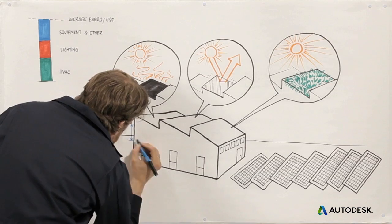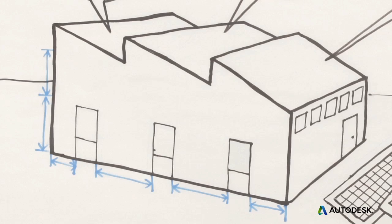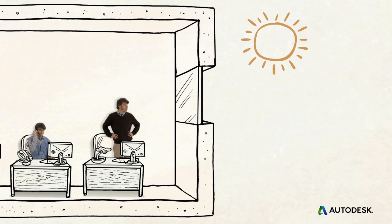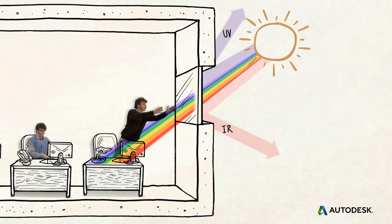Energy also radiates in and out of buildings through windows. You can make windows work for you by optimizing the window-to-wall ratio on each side of the building and choosing windows that optimize how much energy passes through as infrared, visible light, and higher frequency radiation.